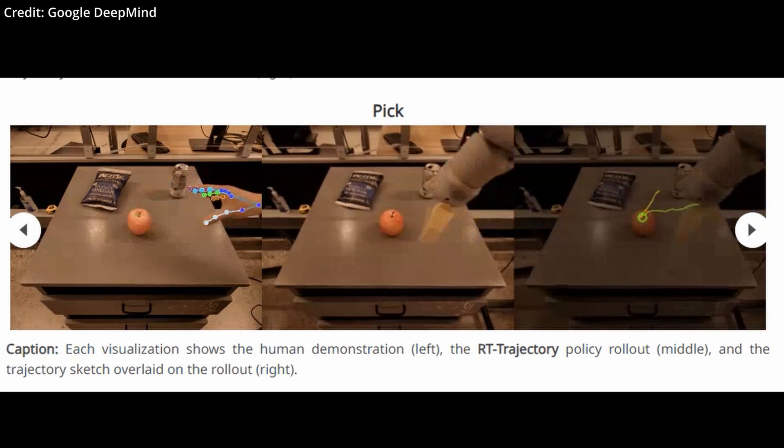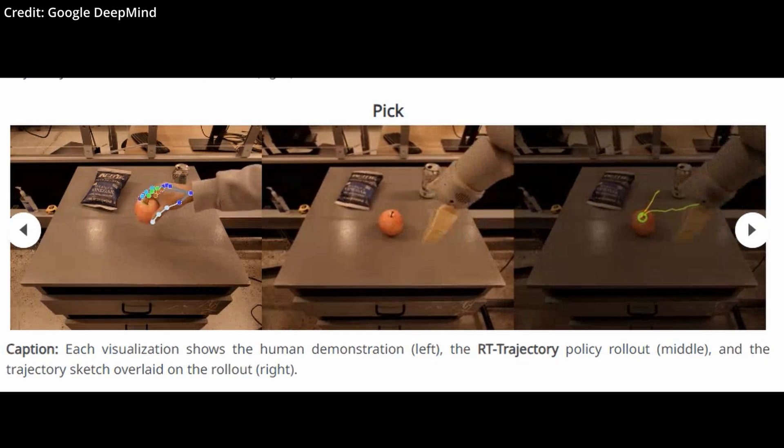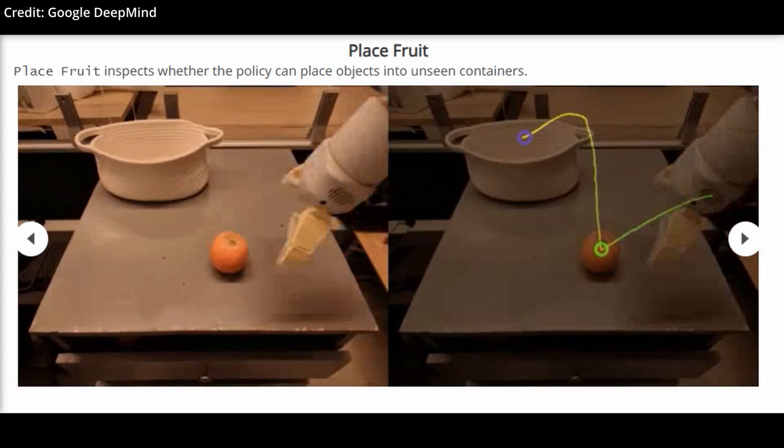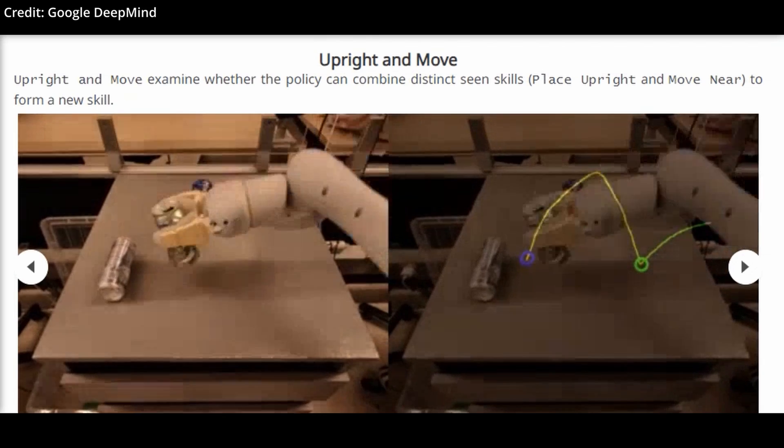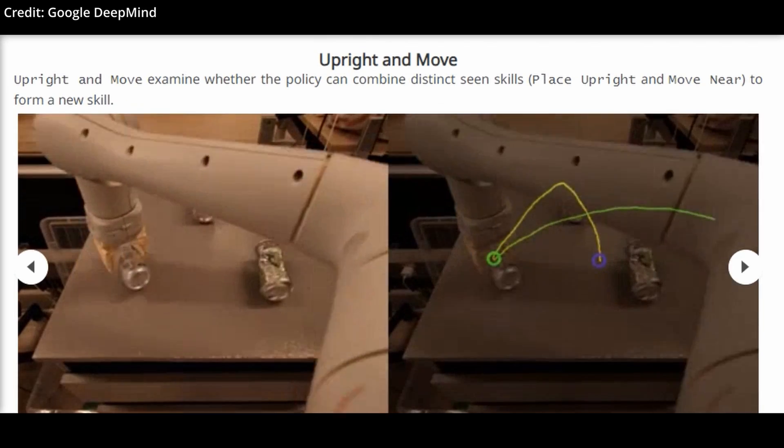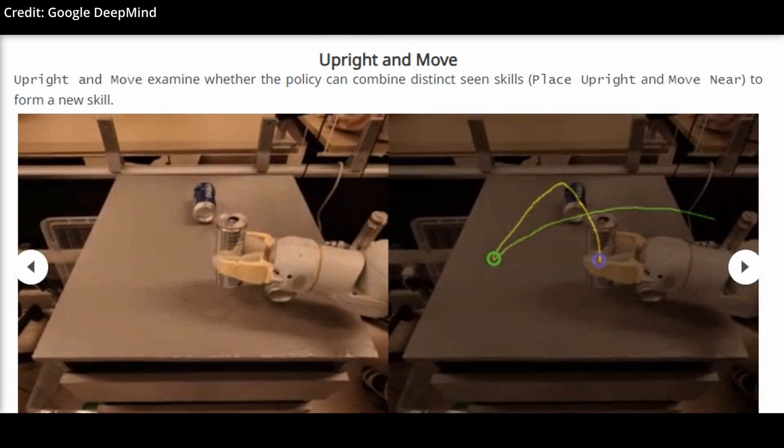In tests involving 41 unfamiliar tasks, an arm controlled by RT Trajectory remarkably doubled the performance of existing RT models, achieving a 63% task success rate compared to 29% for its predecessors.